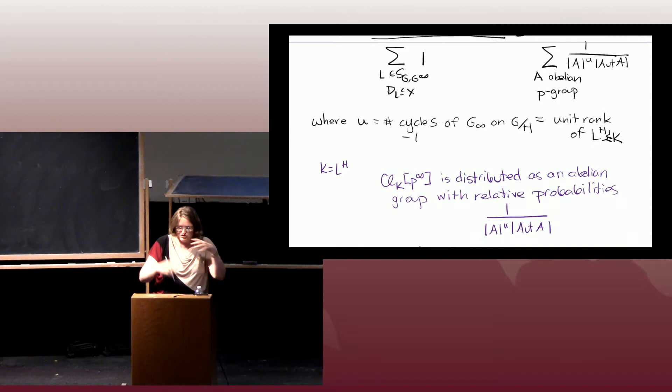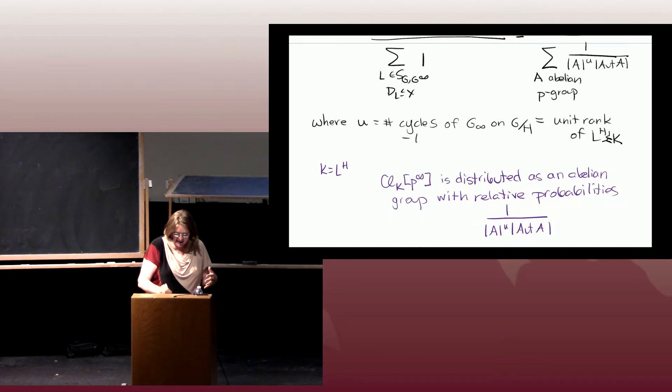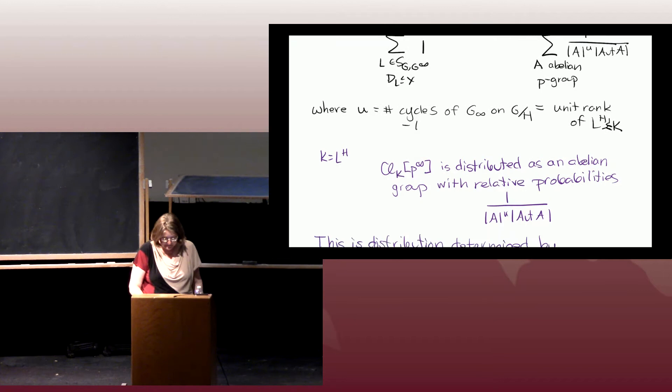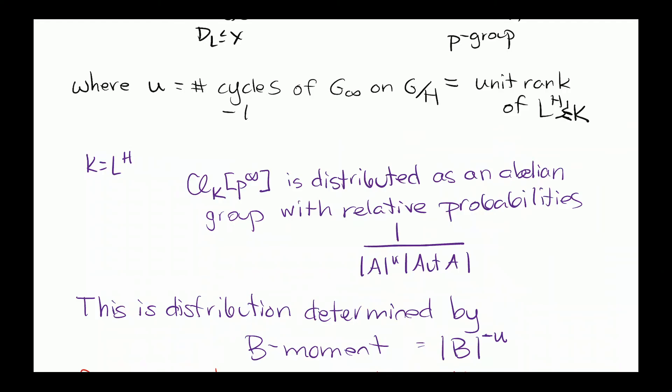Just to summarize the formula: it's saying that when we take these H-fixed fields, their class groups should be distributed with relative probability one over |A|^U times |Aut(A)|, where U is the unit rank of the field K. This distribution is determined by its B-moments, which are the size of B to the minus U. The same caveats about roots of unity issues and counting invariants apply here equally, since this is literally telling you what the Galois conjectures imply in the non-Galois case.